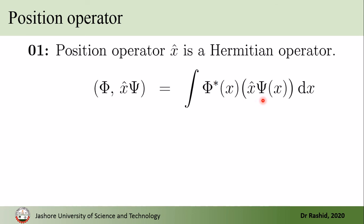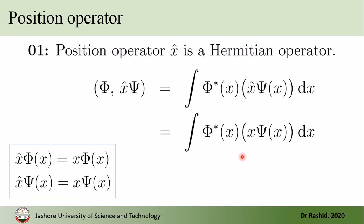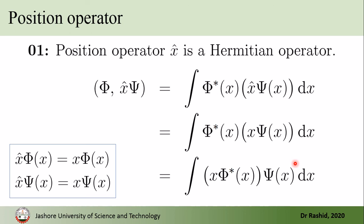Here x-hat is acting on psi. From the definition of the position operator, we know that when the position operator acts on a function it simply means we multiply x with that function. So from this line we write it like this. Now this can be viewed as the product of three functions: phi-star, x, and psi. Since they are simply functions we can change their order, so we write it like this.